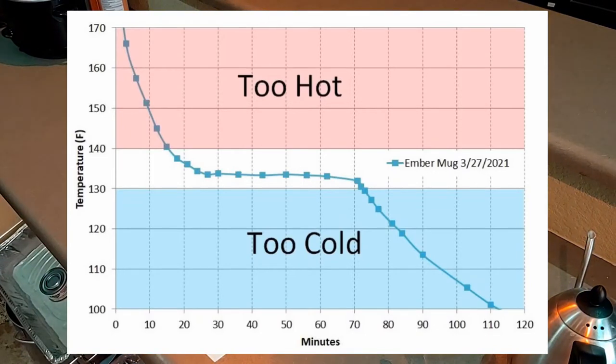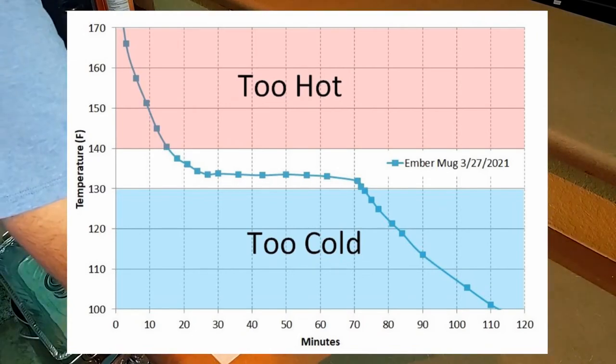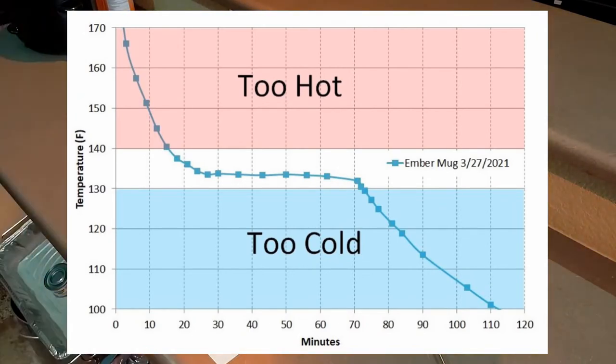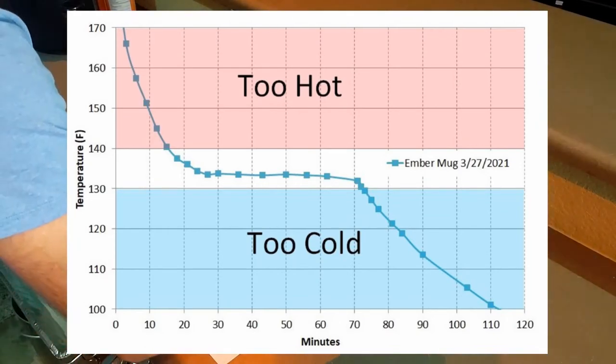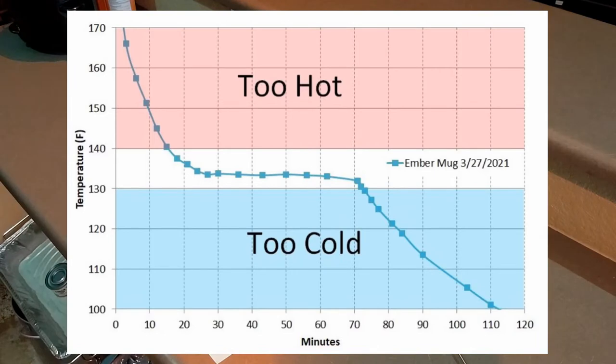This is a graph of that test with time in minutes along the bottom and temperature in degrees Fahrenheit on the vertical axis. You can see that the coffee entered the drinkable zone at about 15 to 16 minutes—that's where the line dips out of the too hot area and enters the white area in the middle of the graph between 130 degrees and 140 degrees.